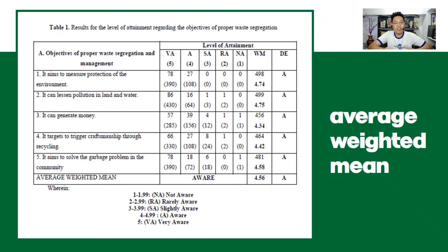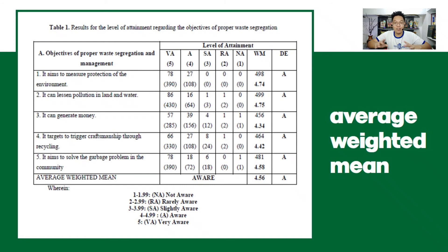The result shows that citizens in our municipality are aware of the objectives of proper waste management and segregation. What was interesting in my study is that while they were aware, in the next part measuring level of attainment — whether they actually apply these things — they were not as aware; it was only slightly aware or slightly attained. That was an interesting finding.